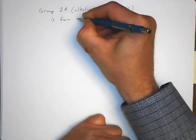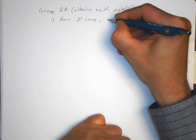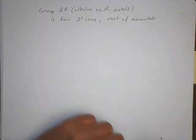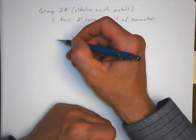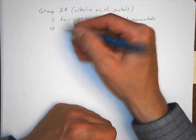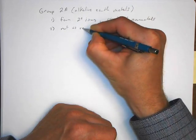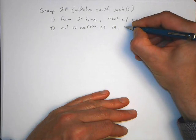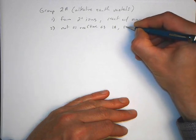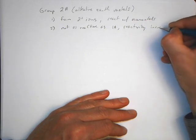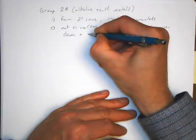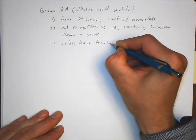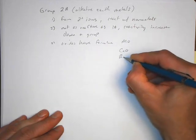They form plus two ions and react with non-metals, much like the alkali metals, but they will form plus two ions rather than forming plus one ions. They're not quite as reactive as the 1A metals, but the reactivity increases down the group, much like the 1A trend also. The oxides have the formula MO, for example calcium oxide or barium oxide.